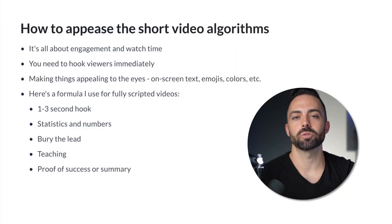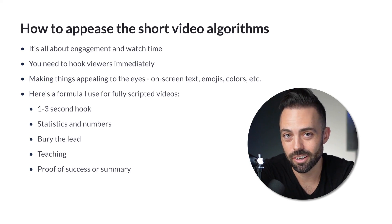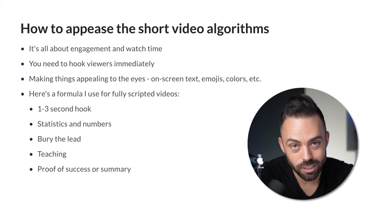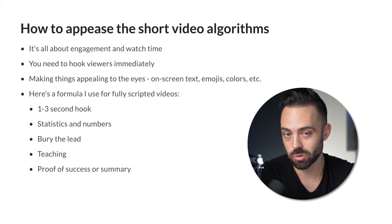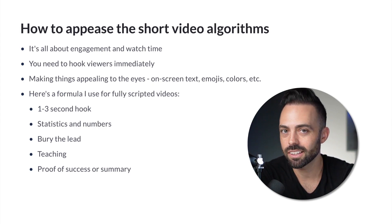So how do you appease the short-form algorithms? Just like the Google and YouTube algorithms, there's also a short-form algorithm. It's all about engagement and watch time — engagement meaning comments, likes, and shares, and then how long someone watches. With shorts, you actually want people to watch it twice or through to the end and a little bit more — like 120% of the video.